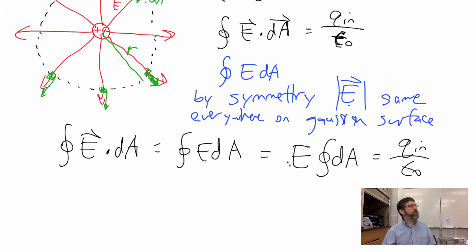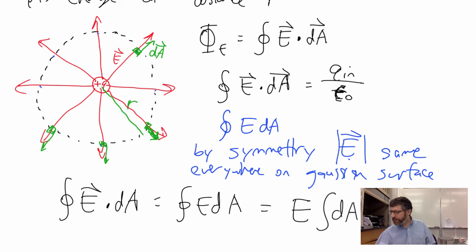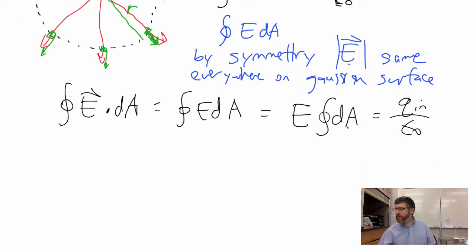e is what we're trying to find. We're trying to find the e field on that Gaussian surface. We're trying to find that e. This is the beauty of it. The integral of dA is what? What is the integral of that closed sphere of radius r of dA? It is the area of a sphere, which is what? 4 pi r squared.